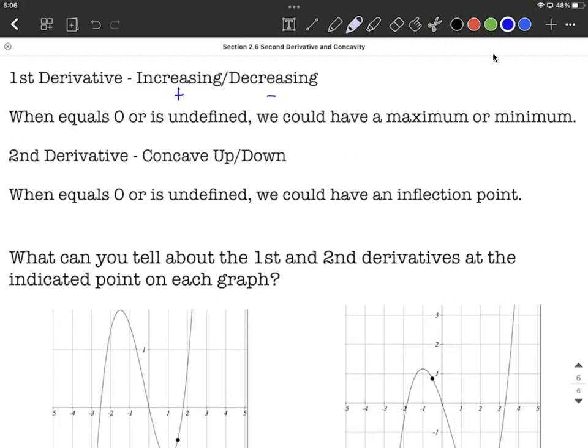All right, next up, the second derivative tells us about concavity. If the second derivative is positive at a given point, that means it's going to be concave up. And if the second derivative is negative, that means concave down.